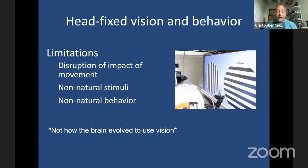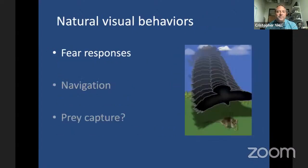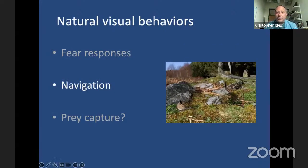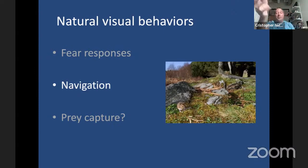These considerations led us to look at vision in the context of natural behaviors. What types of behaviors does a mouse actually use its visual system for? One known behavior is a fear response — if a dark spot looms or sweeps overhead, the animal will freeze or flee. Tiago Bronco and Sam Solomon have done nice work looking at circuits mediating that. Mice also use their vision for navigation; even the Morris water maze, often thought of as a learning and memory task, is actually a visual task, because animals use distal cues in the environment to find the hidden platform.